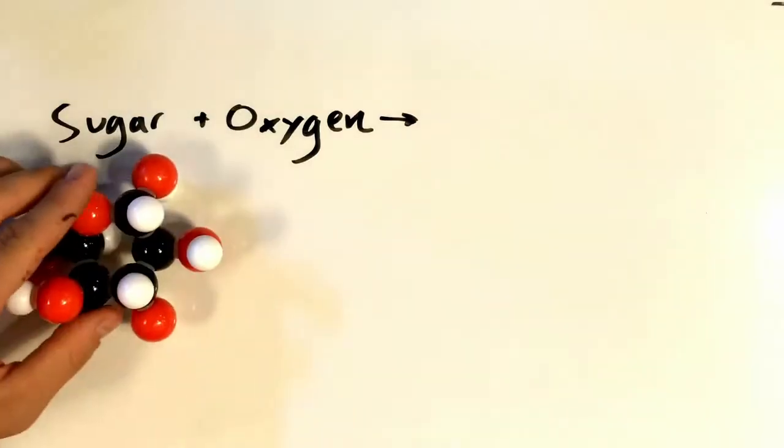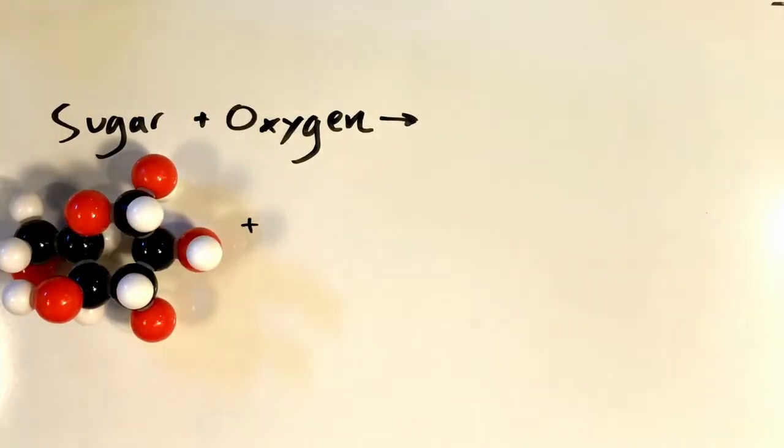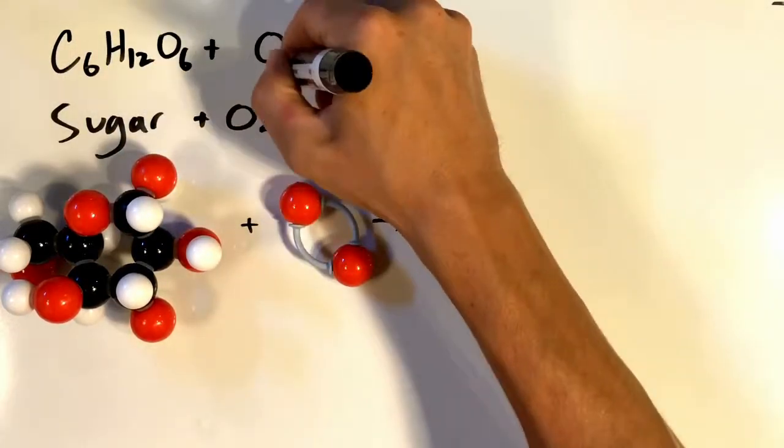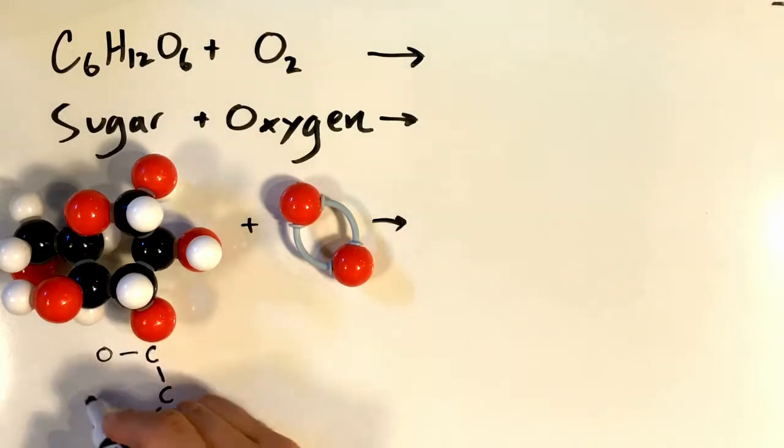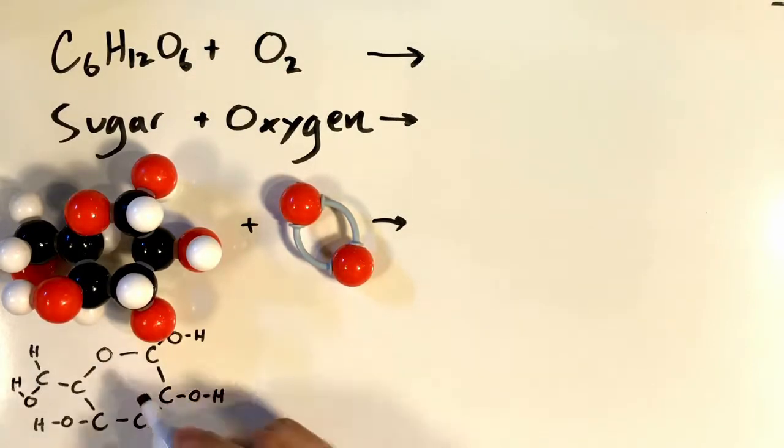Now we can write these out in words. We can also build the structures using our molecular modeling kit. We can write out the chemical formulas, showing how many of each atom each molecule has. And we can also draw out the structures of each molecule.